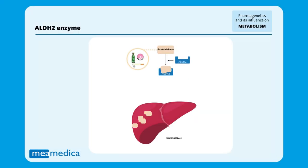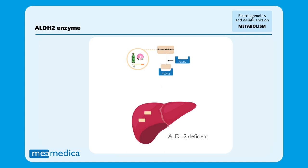Normally, the ALDH2 enzyme quickly and safely breaks down acetaldehyde. Genetic variability in the gene encoding this enzyme may cause ALDH2 to malfunction, and consequently, acetaldehyde is not broken down properly and is accumulated in the body, potentially causing damage.